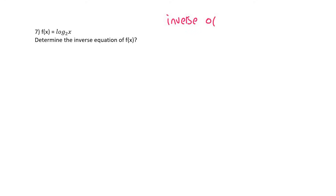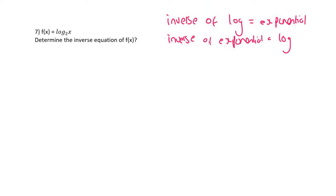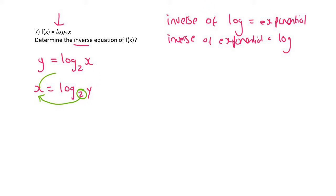Remember this important concept: the inverse of a log is an exponential, and by the same token, the inverse of an exponential is a log. So knowing we're finding the inverse of a log, the answer should be an exponential. Step 1: rewrite using y. Then switch x and y. Then get y alone: the way logs reverse is you take this base number to the power of that number equals y. So it's y equals 2 to the power of x — an exponential, confirming the inverse of a log is an exponential.